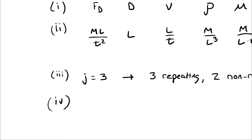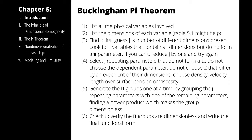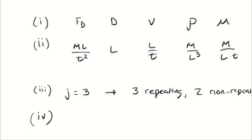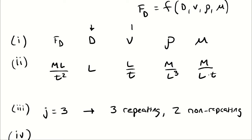For step four, I need to select the repeating parameters that do not form a pi group in and of themselves. Generally, I try to avoid selecting things that are dimensionless already or that vary from each other by just an exponent. Density and velocity are good choices as a rule of thumb. So I'm semi-arbitrarily selecting diameter, velocity, and density — leaving out drag force because it's the dependent variable, and leaving out viscosity because I prefer to avoid viscosity when selecting repeating parameters.